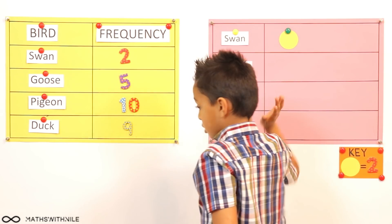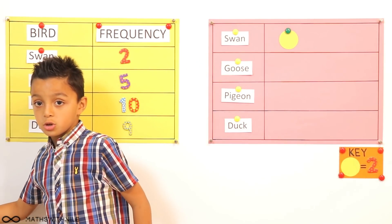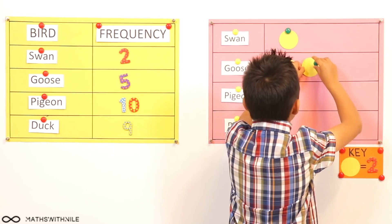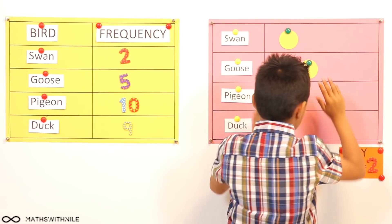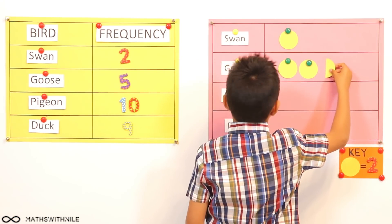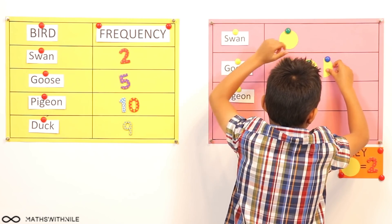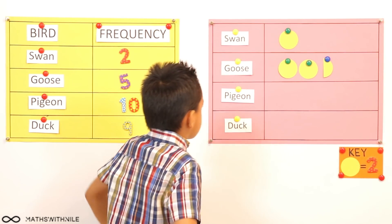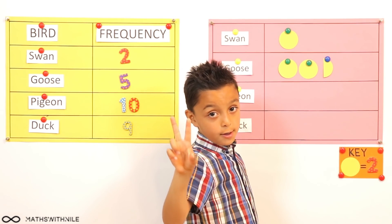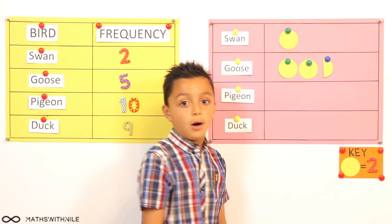Okay. So now we have to do geese, and it says geese are five. So we need two of these, two, four, and then we need one more, so we'll need half a circle. Okay. Two, four, five. So you're saying that half of the circle represents one bird? Yeah. And can you explain why again? Because one whole circle equals two, and you need to half two to get one. So you have to half the two to get one. Brilliant.